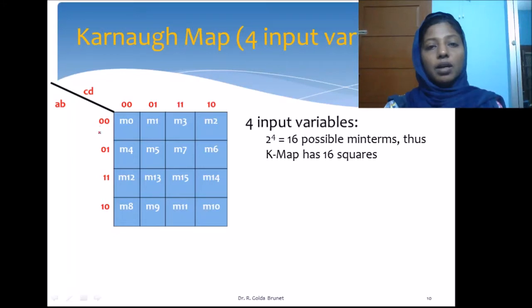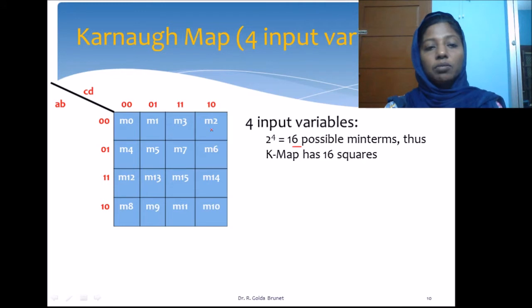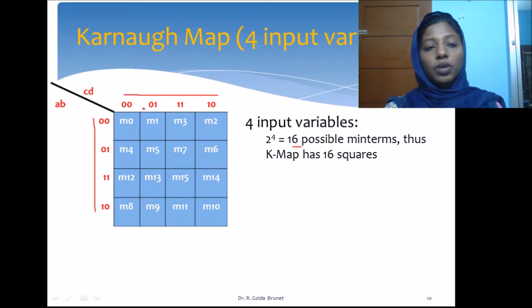A 4-variable Karnaugh map will have 16 minterms. This is the K-map for 4 variables. We have M0, M1, M2, M3, and similarly we have the Gray code sequence along the row and along the column.